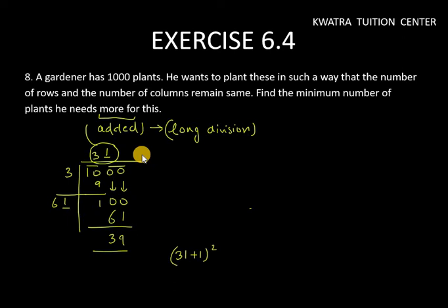3 plus 1 whole square. So 32 whole square. You will get 1024.